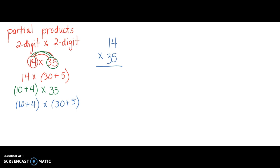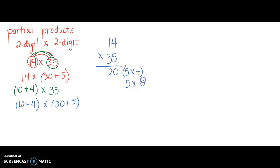First, let's start with ones place times ones place. That is 5 in the ones place times 4 in the ones place. 5 times 4 is 20. Then let's multiply our ones place times our tens place. That is 5 in the ones place times 10 in the tens place — that's a 1 in the tens place — and 5 times 10 is 50.